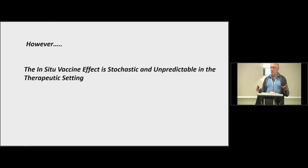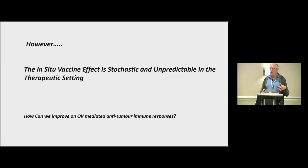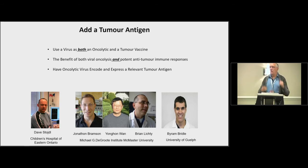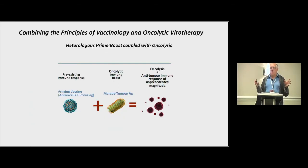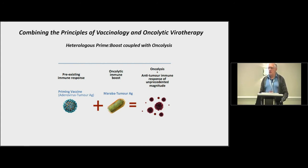The problem with the in situ effect is that we couldn't predict when it would happen. Even though it's defined in most models, not all of them responded. Is there some way we can make the immune response happen more frequently and predictably? Our idea was to add a tumor antigen to the virus itself, so the virus behaves as both an oncolytic virus — replicating and killing the tumor — and also a vaccine at the same time. This is work done with colleagues at McMaster University, the University of Guelph, and Dave in Ottawa.